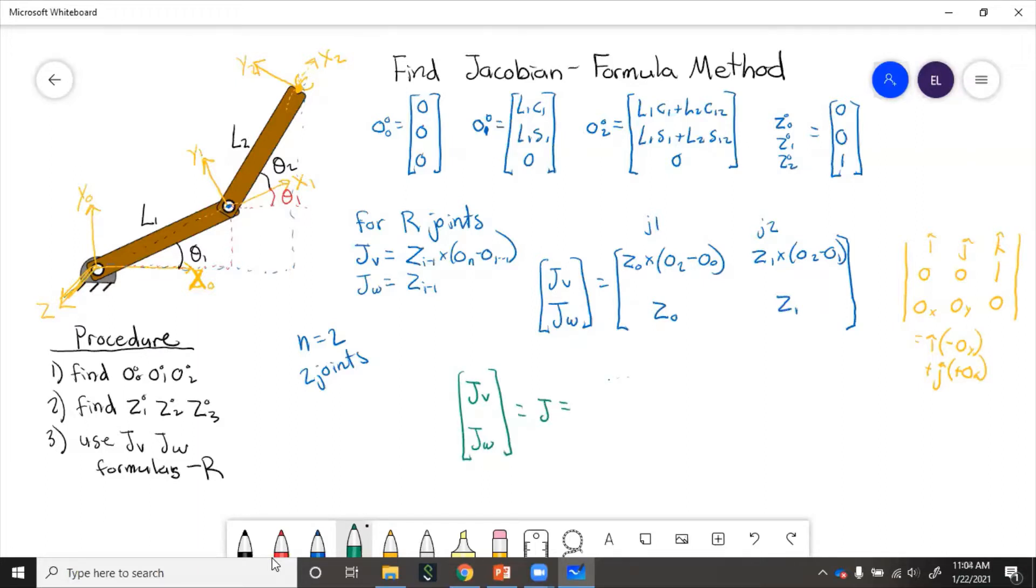Really, we'll have O2 to do this cross product with. And for second joint, we'll have O2 minus O1. So we get rid of the L1 c1 step and we're just left with the L2 part.